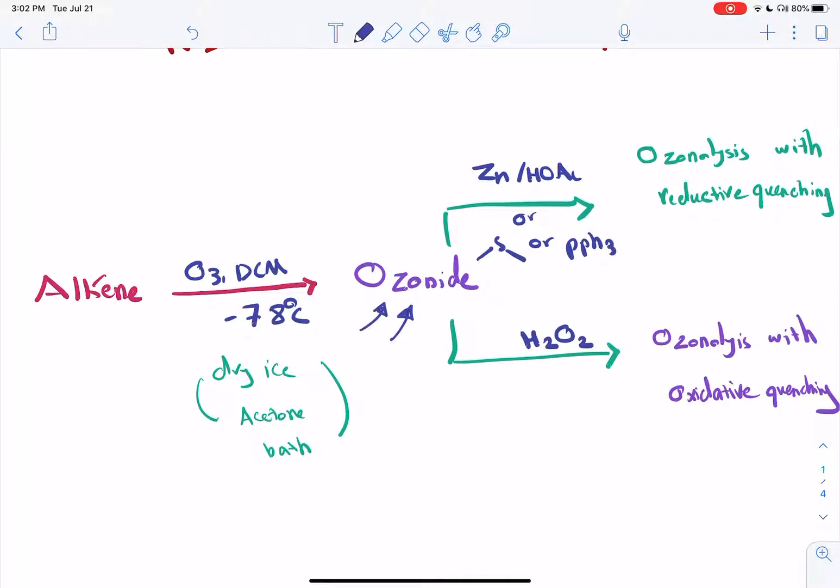And then you can subject that to reductive quenching conditions using zinc and acetic acid, or dimethyl sulfide, or triphenyl phosphine, or something similar to that, which is what is more commonly done, and gives you reductive ozonolysis products. Or you can subject the ozonide to oxidative quenching, which gives you a different set of products.